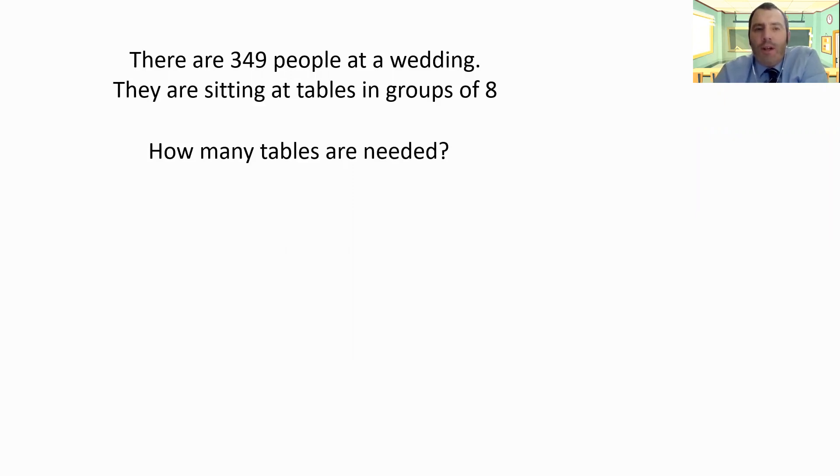The question is asking us is 349 divided by eight. So let's have that written down. Now, I can't divide three by eight. There aren't. It's just impossible. So it's going to be zero. I need to exchange my 300 to my tens. So I've now got 34 tens. I can do that because 34 is greater than eight.